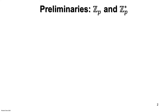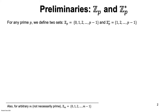To define the discrete log problem, we first need to be familiar with two sets called ZP and Z*P, where P is some prime number. ZP consists of the numbers 0, 1, 2 up to P minus 1. Z*P is the same set, but with 0 omitted.